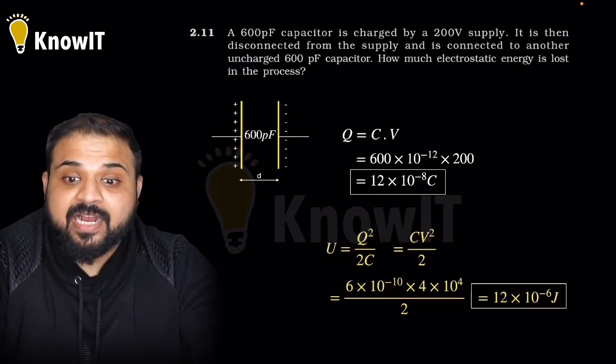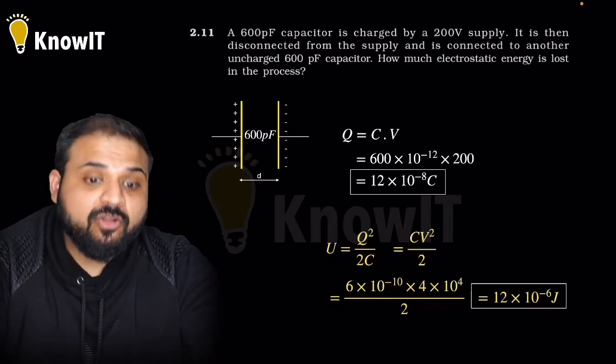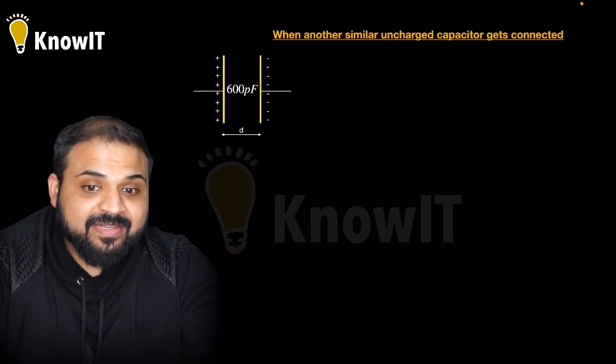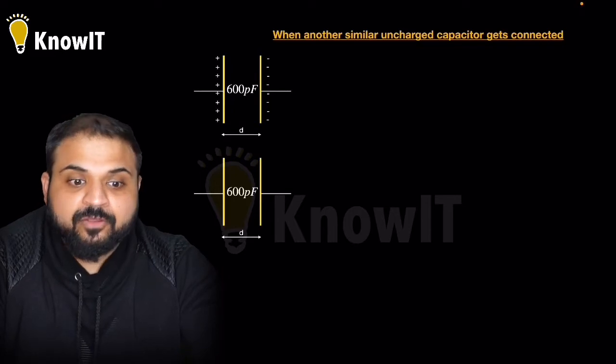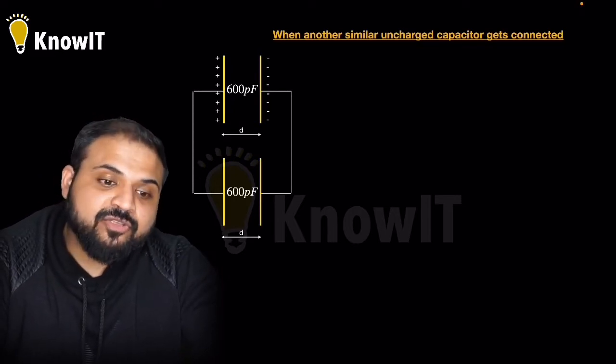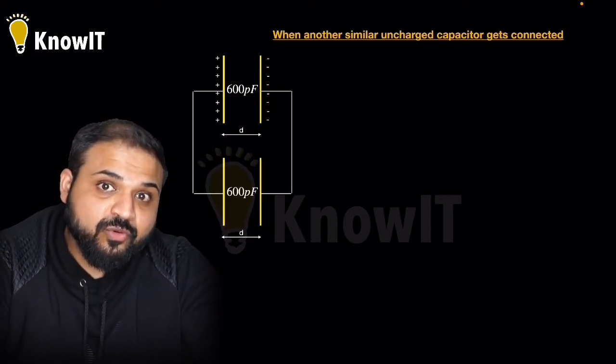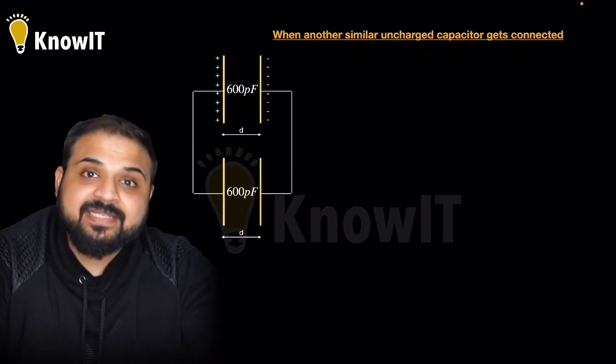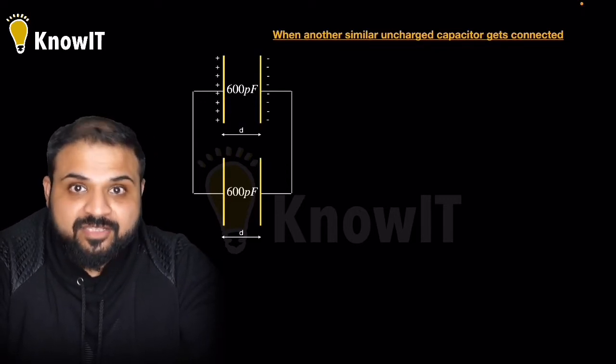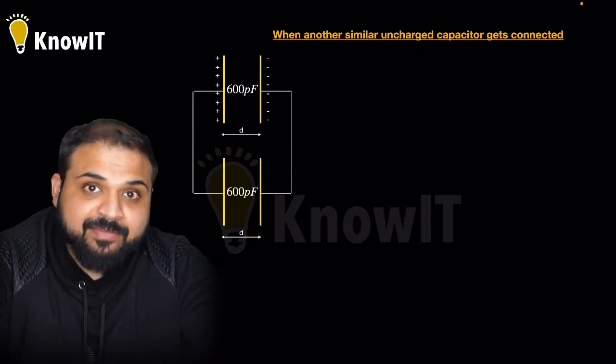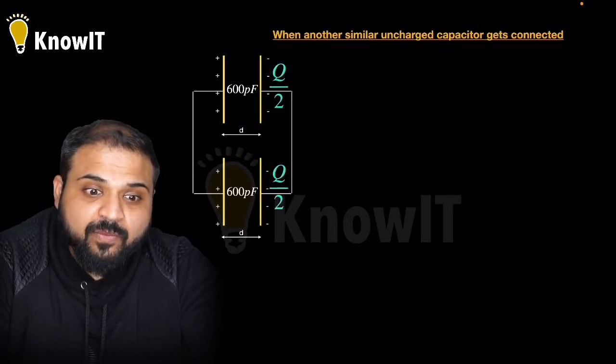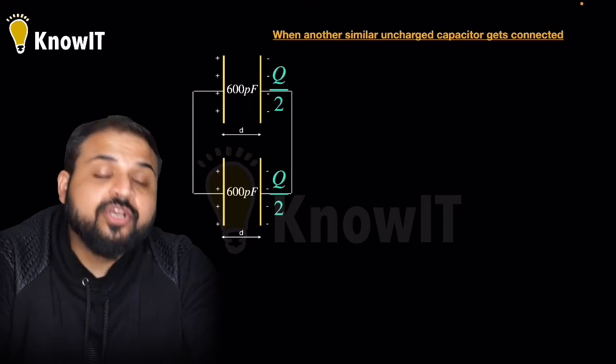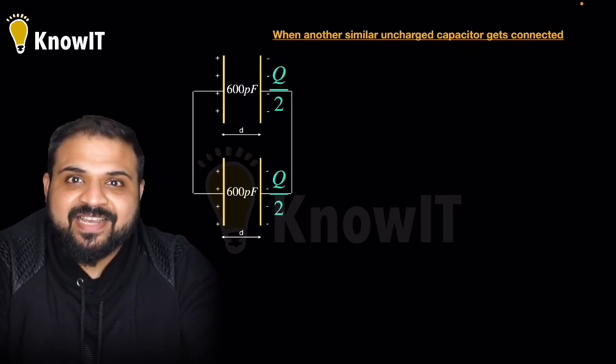Second part: how much electrostatic energy will be lost if we are connecting this capacitor with another similar capacitance of the same value? When we join the same capacitor, charge distribution will be equal. If capacitor is different then charge distribution will be different. You can see the animation here - some charge comes from here and equal amount of charge distributes.